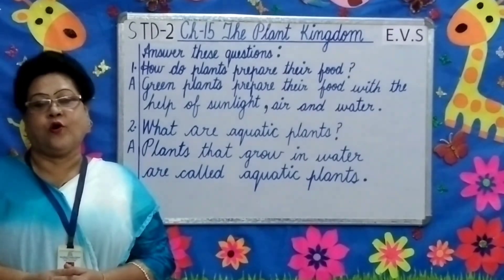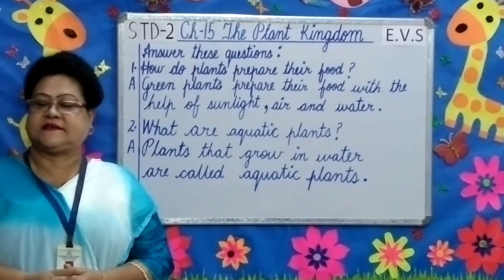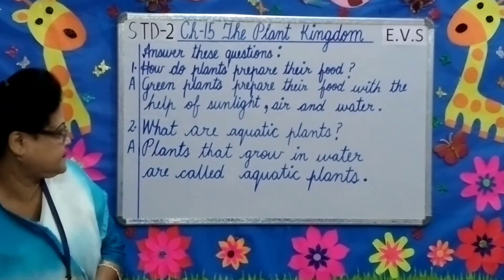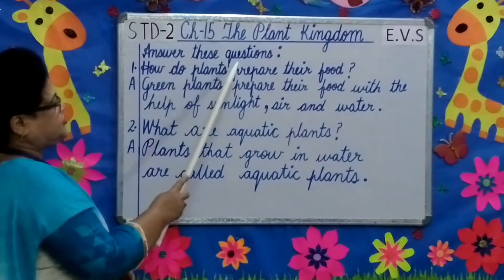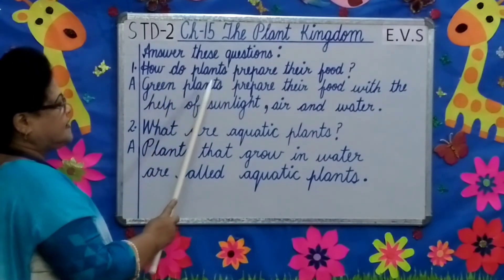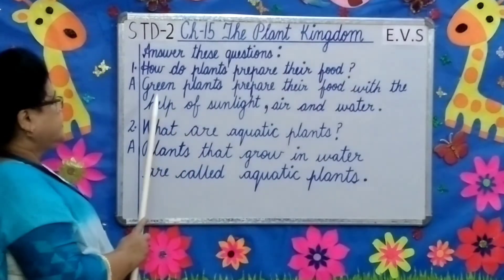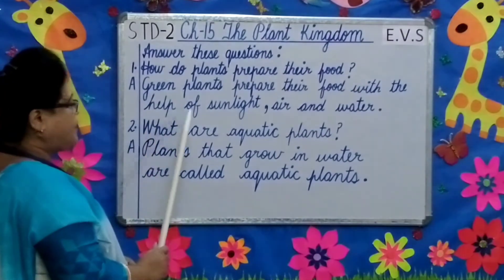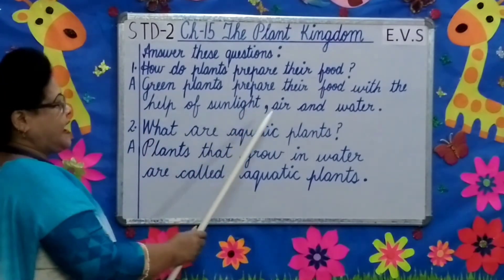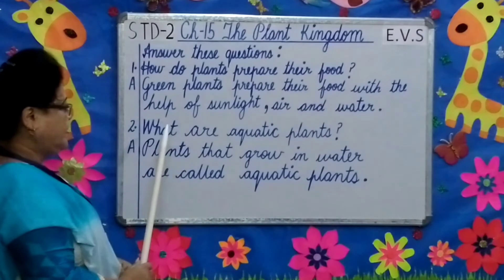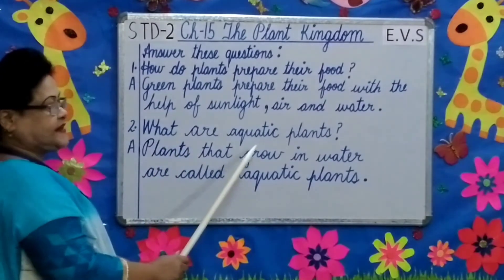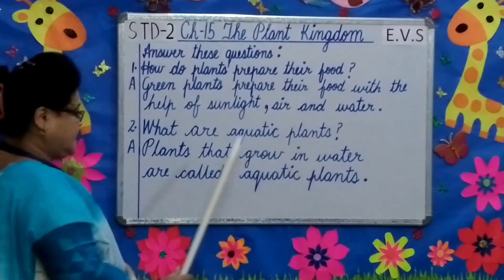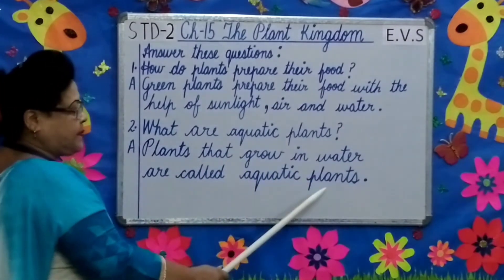Children, I hope you all have understood the lesson. Now let us move on to the next topic. Answer these questions: How do plants prepare their food? Green plants prepare their food with the help of sunlight, air, and water. What are aquatic plants? Plants that grow in water are called aquatic plants.